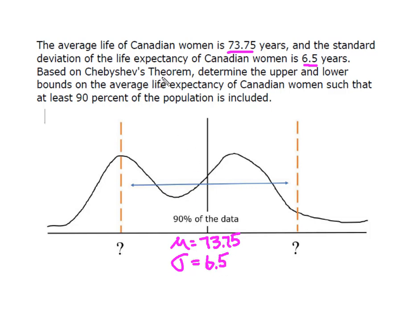And using Chebyshev's theorem, determine the upper and lower bounds. So I'm looking for the upper bound and the lower bound so that at least 90% of the population is included. So between this point on the curve and this point on the curve, I want to have 90% of my data or 90% of Canadian women included in this interval.